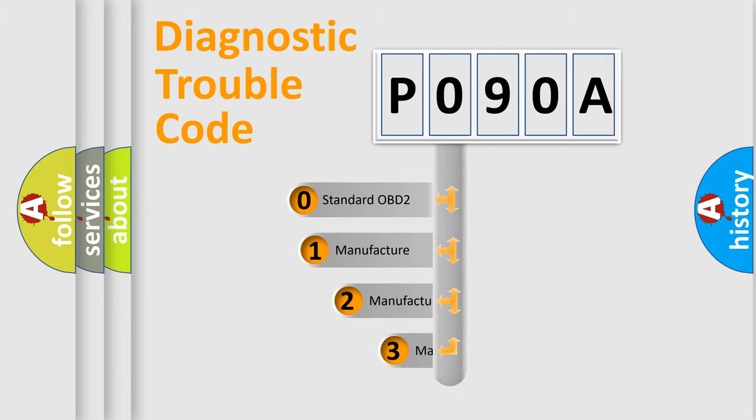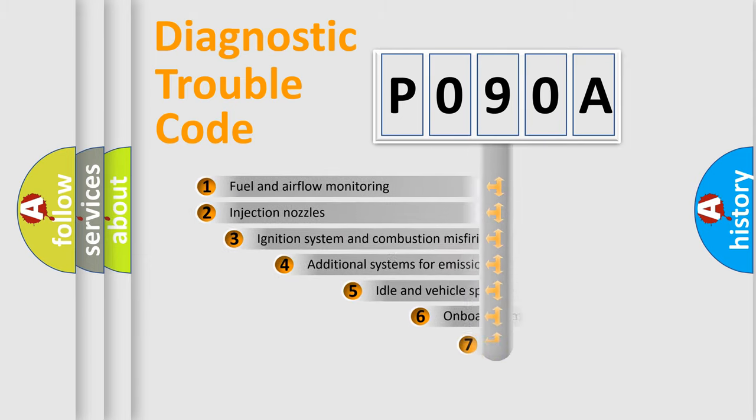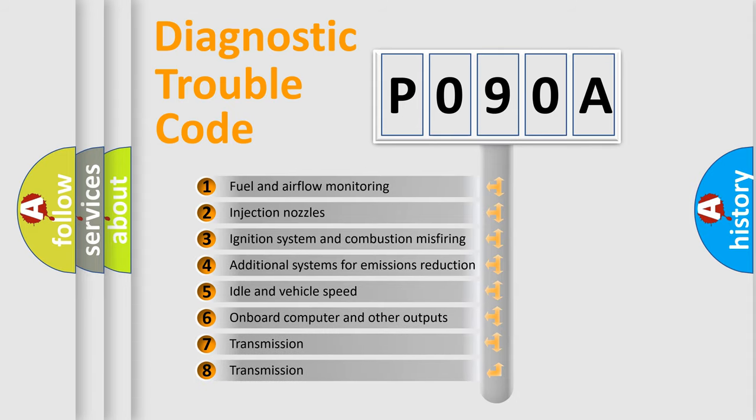If the second character is expressed as zero, it is a standardized error. In the case of numbers 1, 2, or 3, it is a more prestigious expression of the car specific error. The third character specifies a subset of errors.